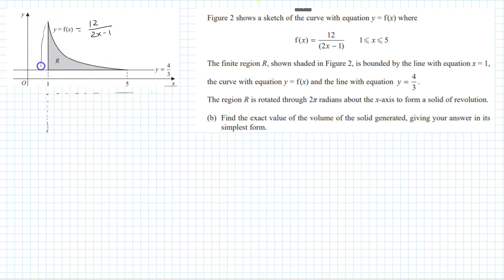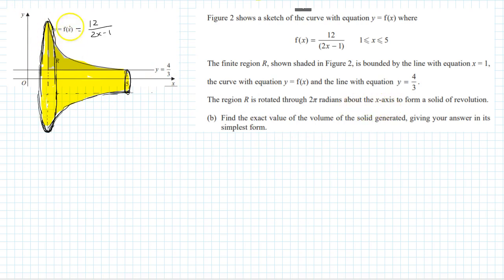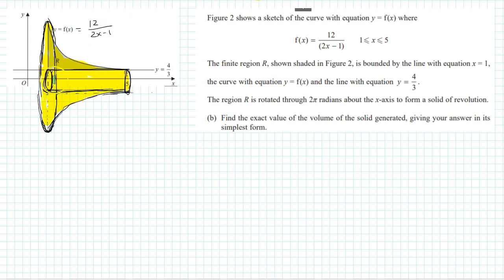The region R is rotated 2π radians about the x-axis to form a solid of revolution. When it is revolved, this shape is formed, but since the figure starts from the line y equals 4/3, it creates a hollow cylinder inside — there is no mass in that inner cylindrical region.